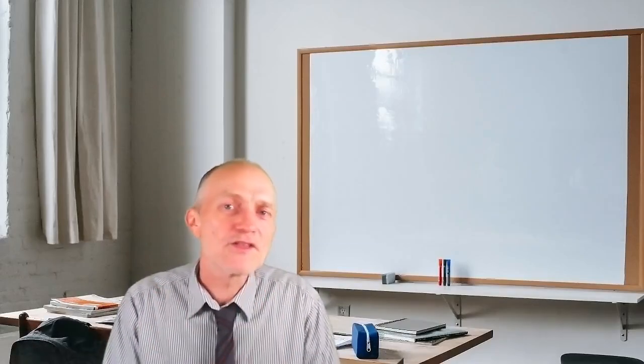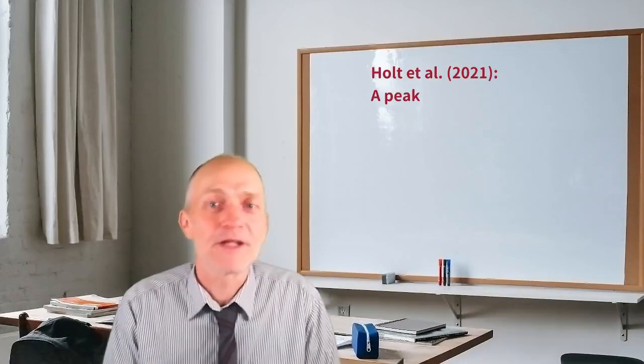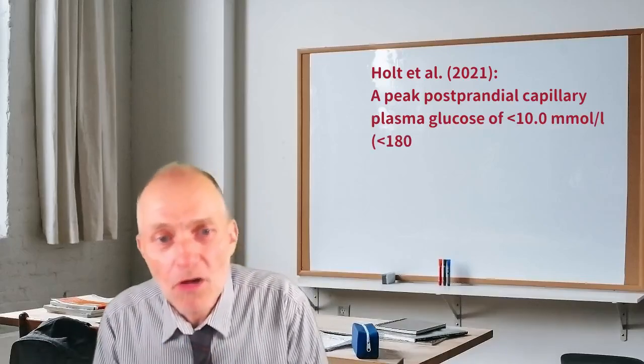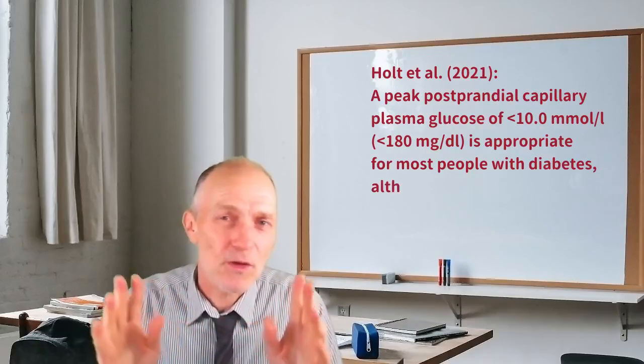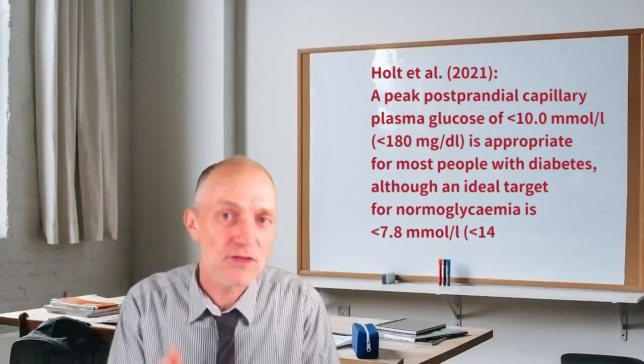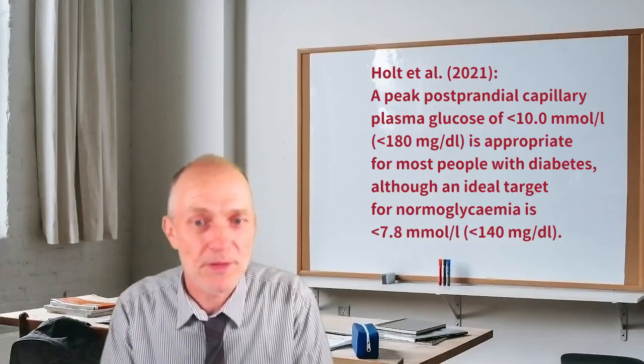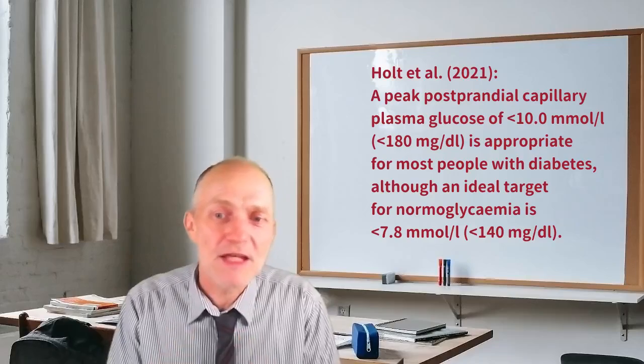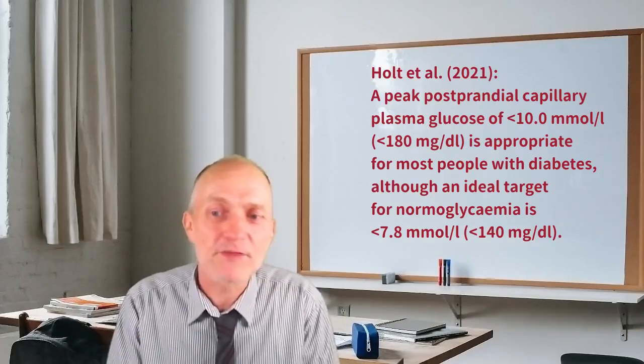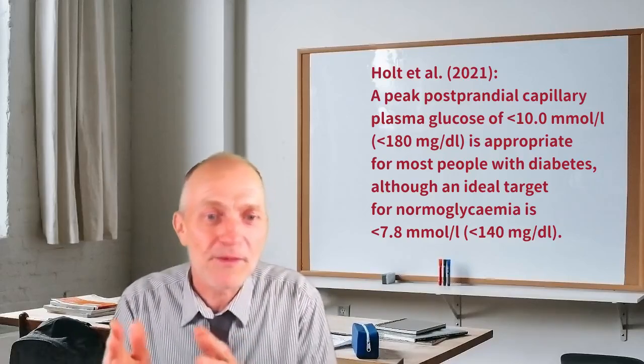As I mentioned in my other video about time and range, people can try to go for this so-called tight range, that's 70 to 140, or 3.9 to 7.8, if they can safely do so without massively increasing the risk of hypoglycemia.